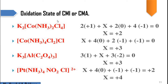Next is the oxidation state — how to determine the oxidation state of the central metal ion or central metal atom. The first example is potassium tetrachlorodiamine cobalt. When we do the ionization, we get 2 K-positive, so the charge on the complex is di-negative. This is a simple calculation for determining the oxidation state of the central metal ion.